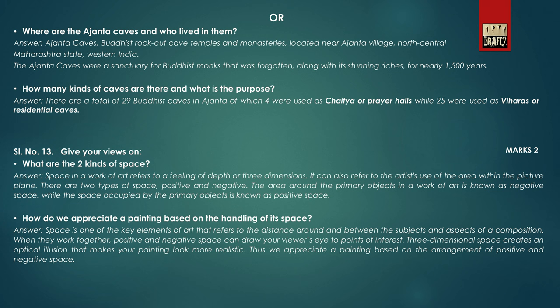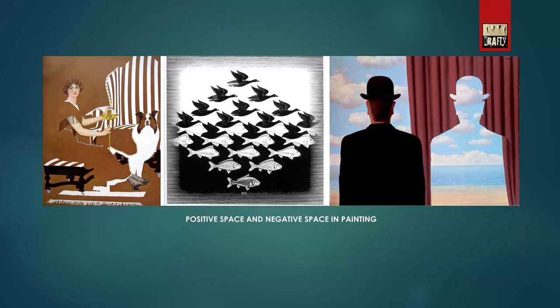Question serial number 13 asks: what are the two kinds of spaces, and how do we appreciate a painting based on the handling of its space? These are three paintings based on positive space and negative space.